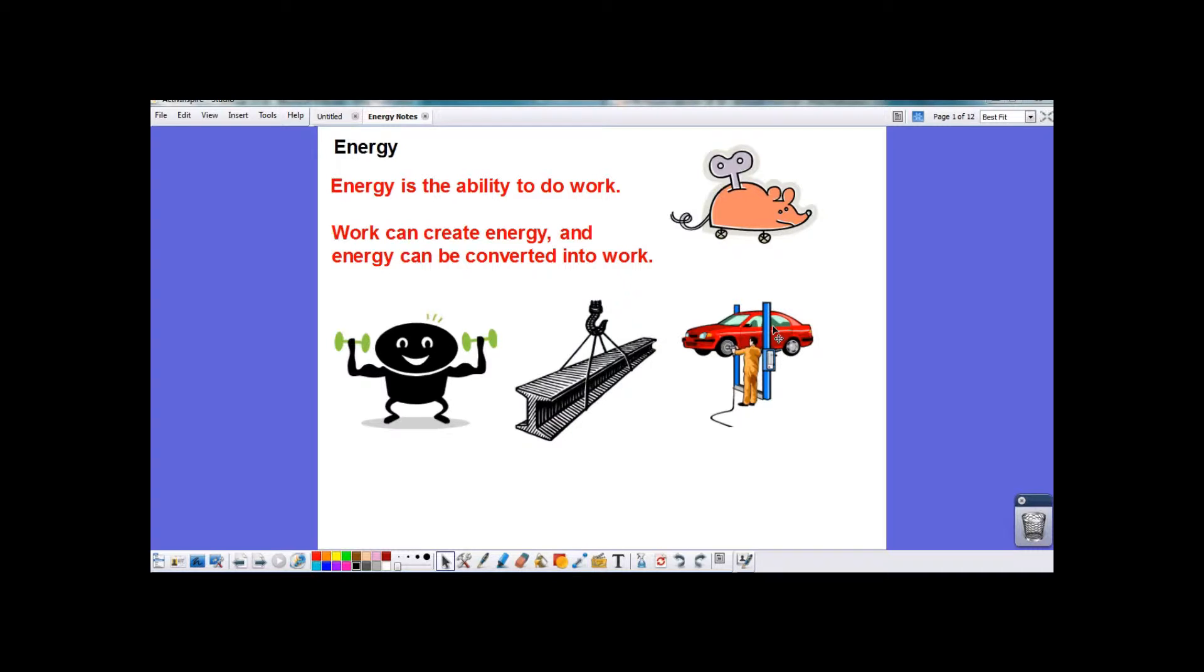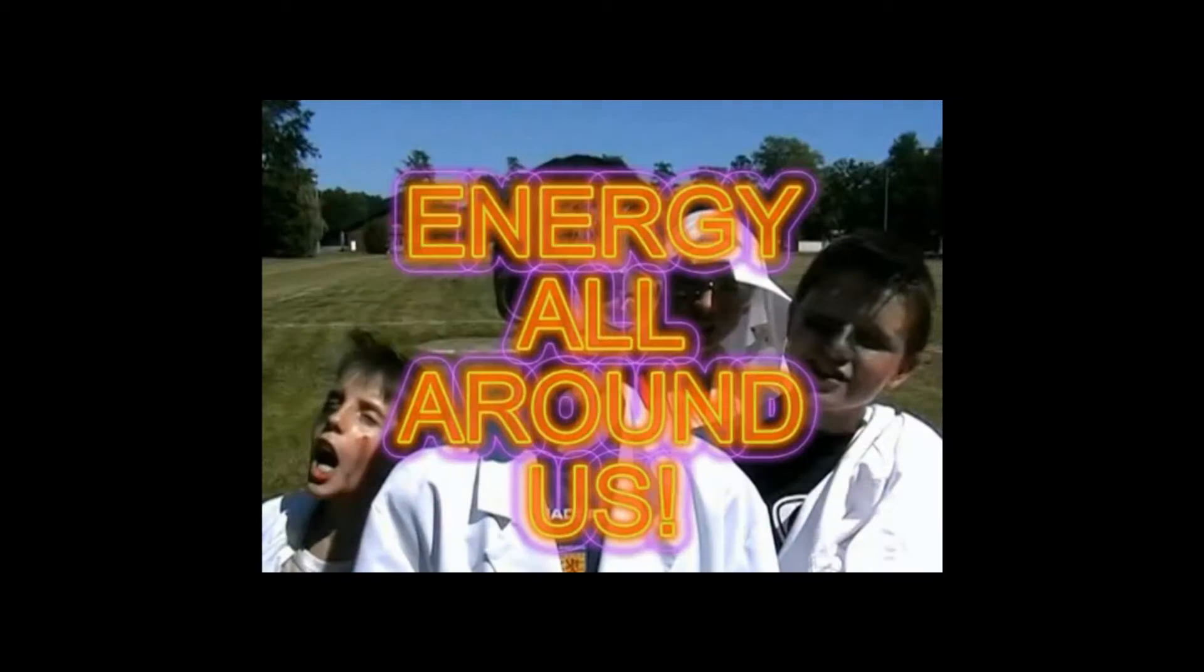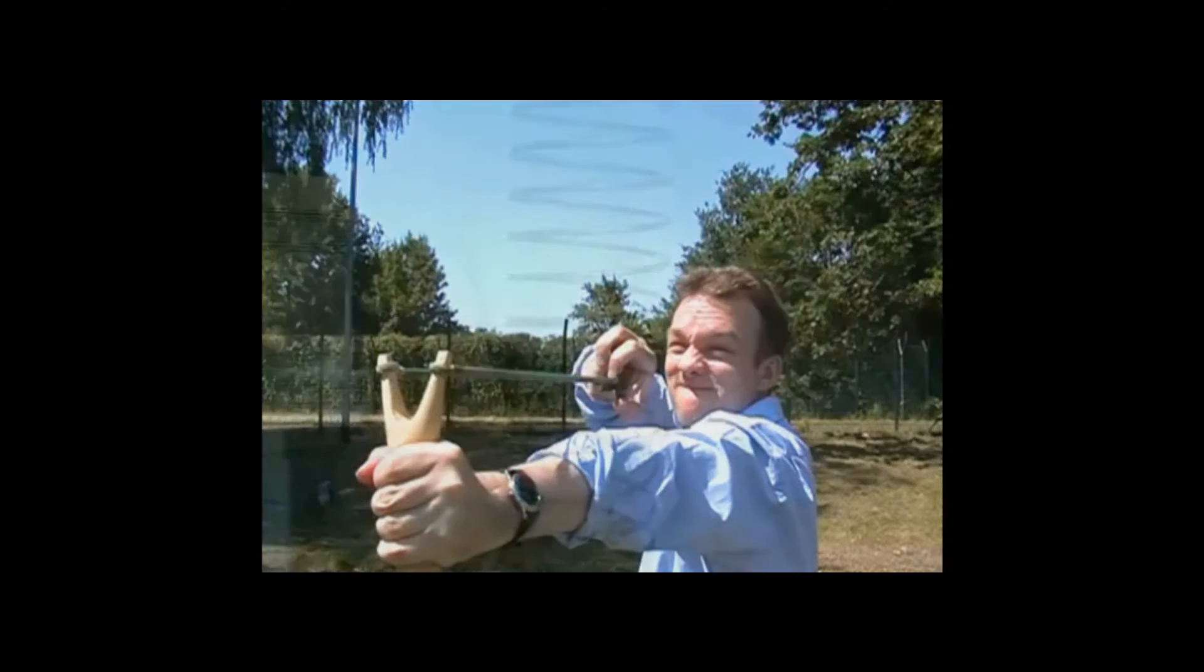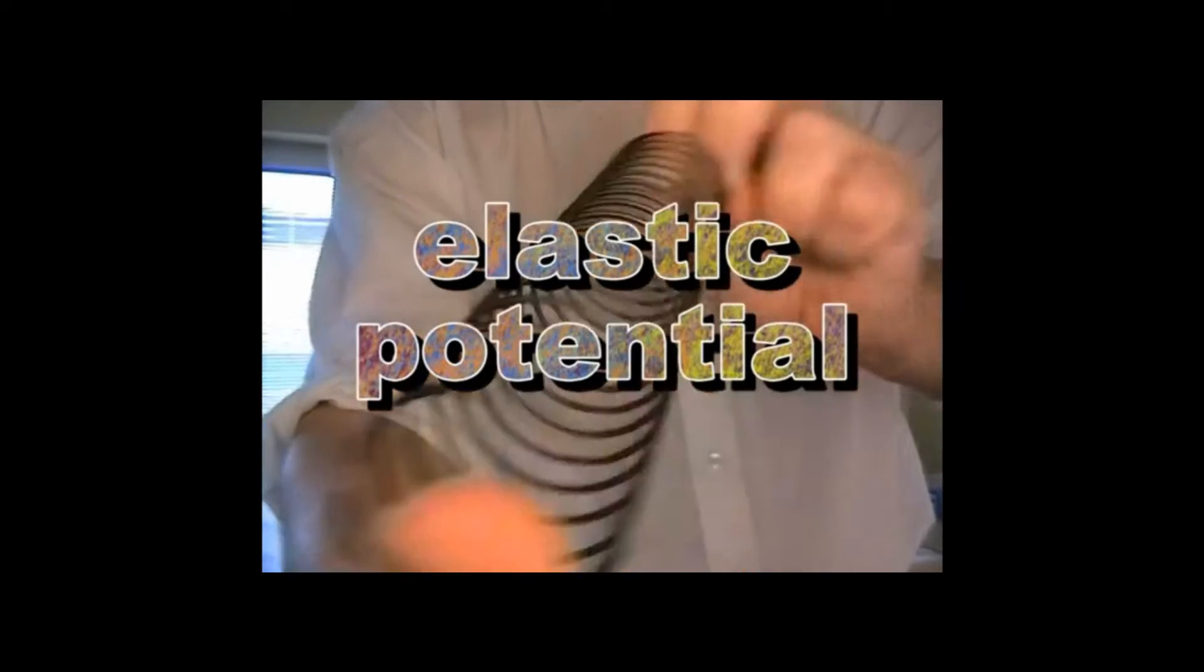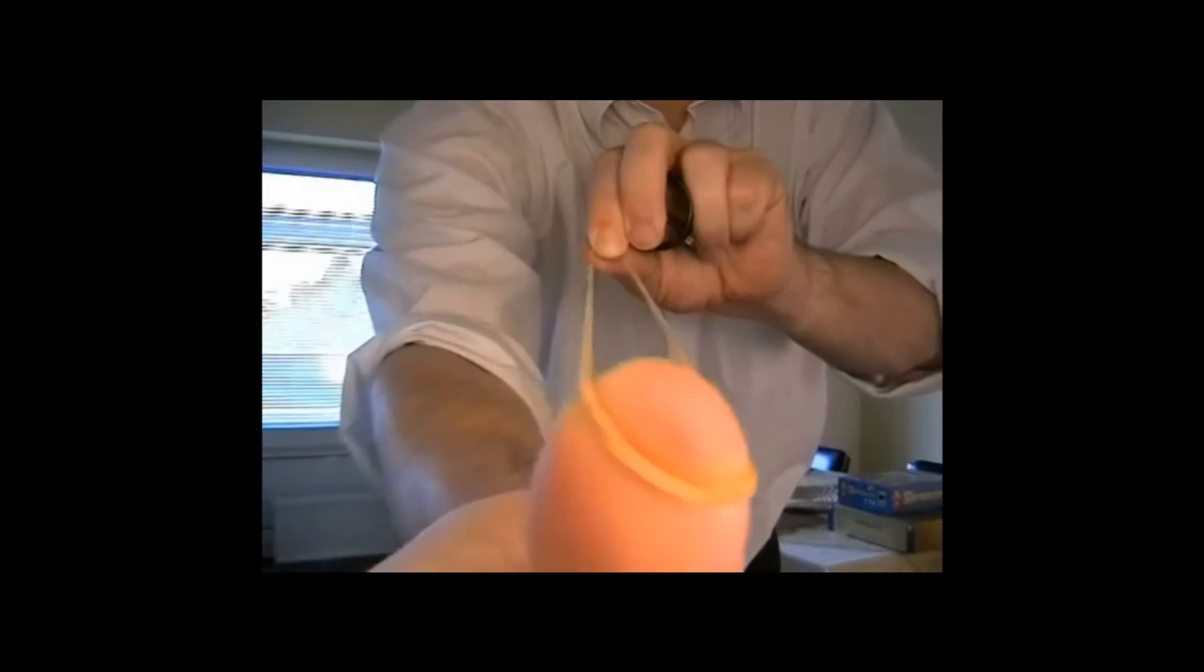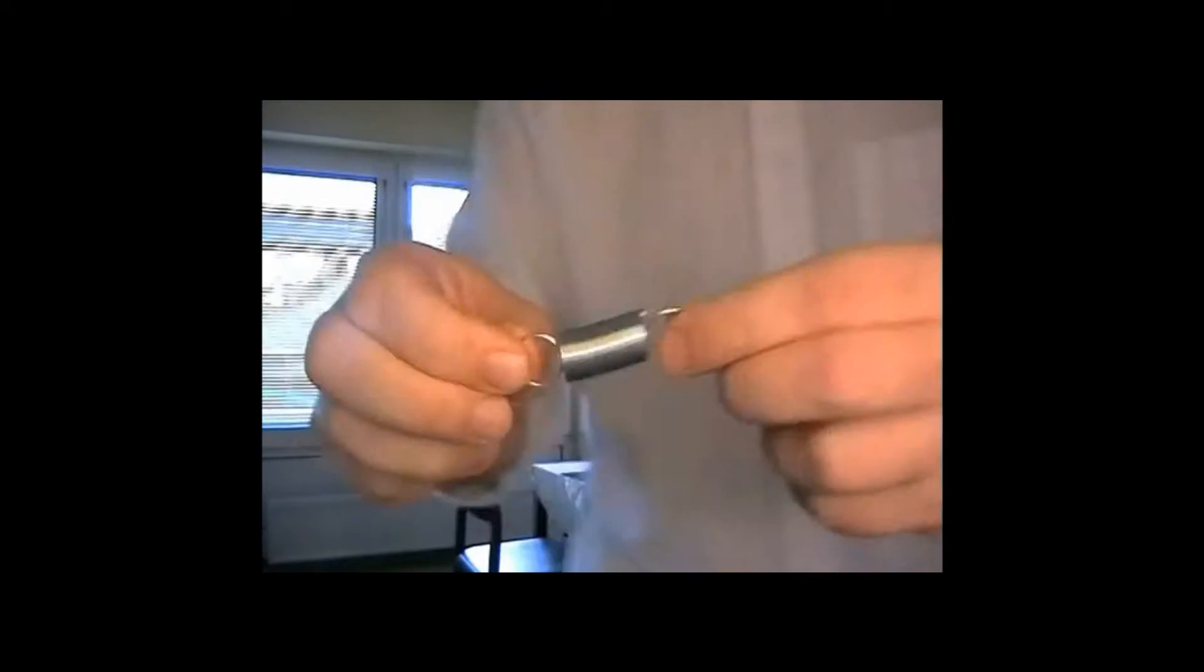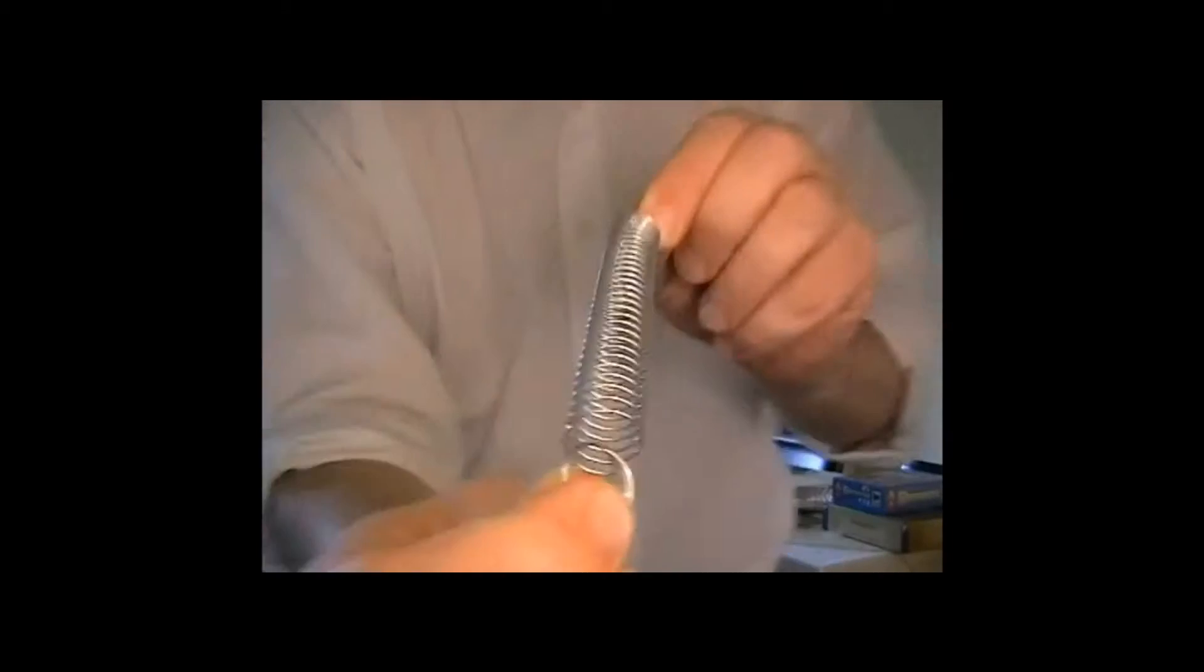So next, we're going to talk about some specific types of energy. The first one is going to be elastic potential energy. We give an object elastic potential energy when we stretch it like a spring or an elastic band. It's called potential energy because the energy is stored. Let's look at this in a little more detail.